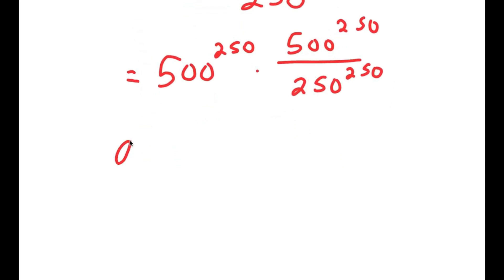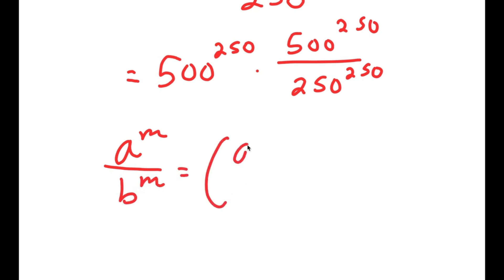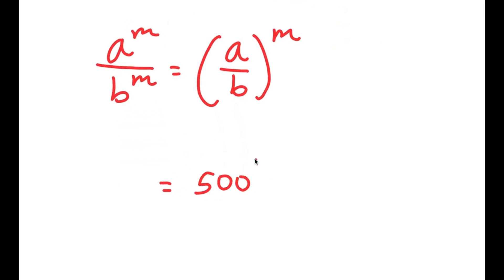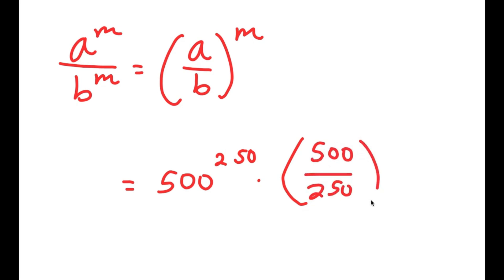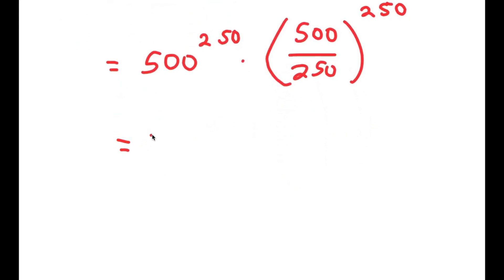Now, if I have something in the form a to the power of m over b to the power of m, this equals a over b to the power of m. So 500 to the power of 250 over 250 to the power of 250 can be rewritten as 500 over 250 to the power of 250, which equals 2 to the power of 250. This leaves me with 500 to the power of 250 times 2 to the power of 250.